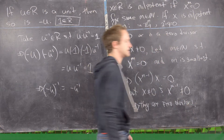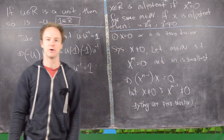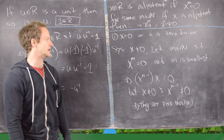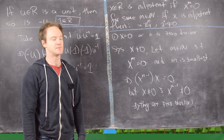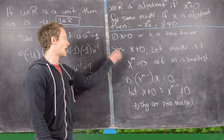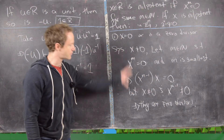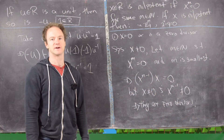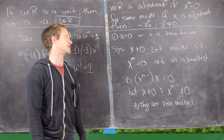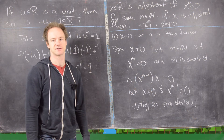In other words, if you have a nilpotent element then it must be a zero divisor. Next we'll prove a couple more results involving nilpotent elements.